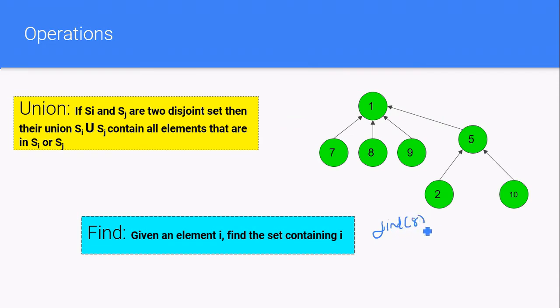In find operation, if suppose find of 8, find of 8 will return 1 because the parent node of the disjoint set where 8 belongs to is 1. So it will return 1. And if we perform union like this, find of 2 will return 1.